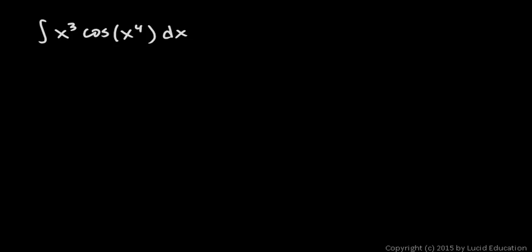In this problem, we need to integrate x cubed times the cosine of x to the fourth dx. And in this case, we're integrating a product, two functions here multiplied together, which is inherently a little bit tricky to do.